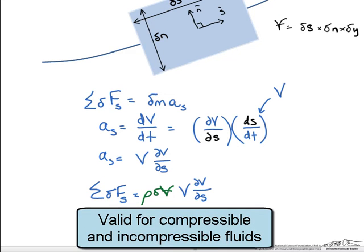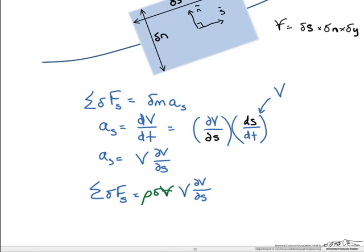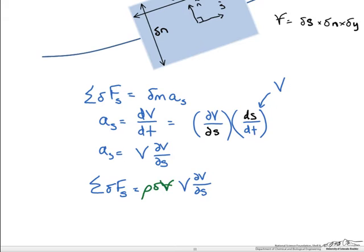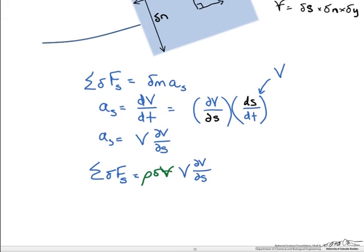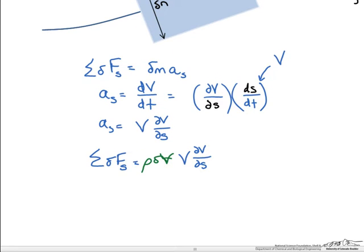This equation is valid for both compressible and incompressible fluids. As we move along, one of the main assumptions in using the Bernoulli equation is that we assume it is incompressible. So we need to rewrite the left side of the equation — the sum of all the forces acting on the particle — by collecting all the different forces that are acting in the streamline direction.